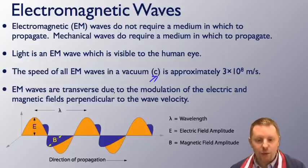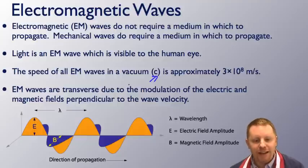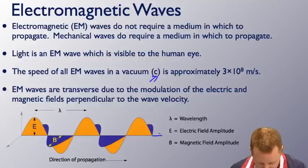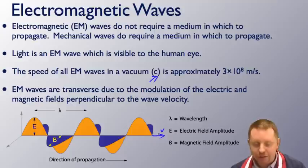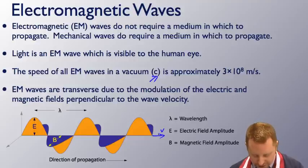Finally, electromagnetic waves are transverse due to the modulation of the electric and magnetic fields perpendicular to the wave velocity. So here we have a picture of a wave traveling to the right. The electric field is modulating up and down. The magnetic field is changing into and out of the plane, and the wave's velocity is perpendicular to both of those modulations. That makes it a transverse wave.